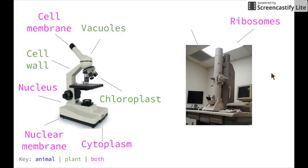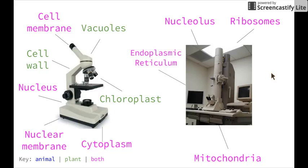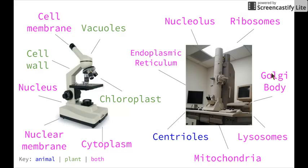With the electron microscope, we can see ribosomes, the mitochondria (which is the site of cellular respiration), the nucleolus (which is the part of the nucleus visible under electron micrographs), the endoplasmic reticulum, the Golgi body, lysosomes, and centrioles. We need to be able to identify those visible under each microscope, and we'll also look at the function of all of them as we go through.